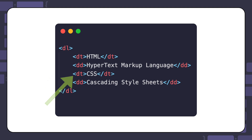And finally, after each term, you will find a description details element, DD, for the description or details associated with that term. In this example, they are Hypertext Markup Language and Cascading Style Sheets.